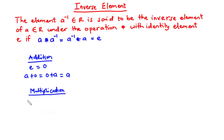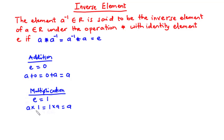Now let's do the same for multiplication. The identity element e under multiplication is equal to one, because a times one equals one times a equals a. When you combine a and one under multiplication, the result does not change — the result is still a.